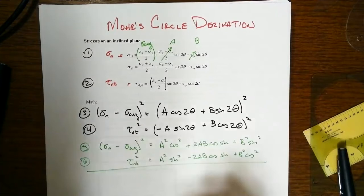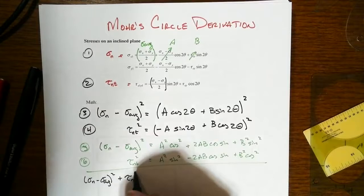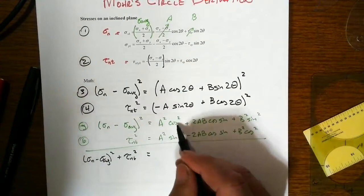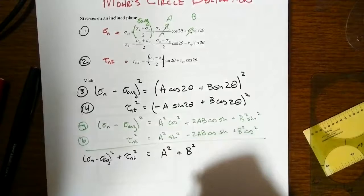And you'll get sigma n minus sigma average quantity squared. You might be like, well, why don't you expand that? And you'll see why in a second. Just leave it as is. These two add together, and they have the cosine squared and sine squared with the same argument and the same amplitude. So factor that out and you just get A squared. And then these two cancel away. And we get, for the other one, plus B squared.